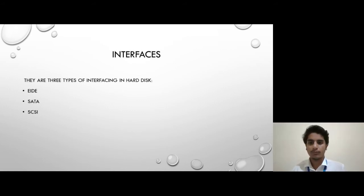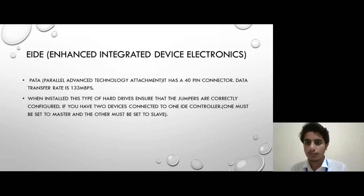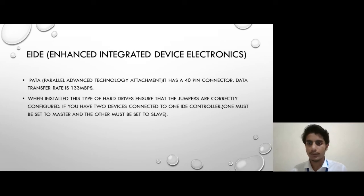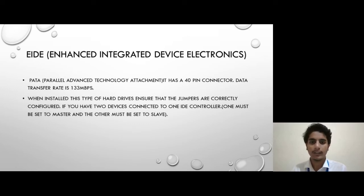There are three types of interfaces in a hard disk. First is EIDE, Enhanced Integrated Device Electronics, also known as PATA. It has a 40-pin connector and a data transfer rate of 133 Mbps. When installing this type of hard disk, ensure that the jumpers are correctly configured. If you have two devices connected to one IDE controller, one must be set to master and the other must be set to slave.